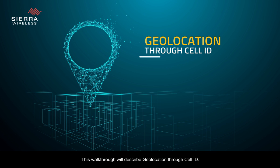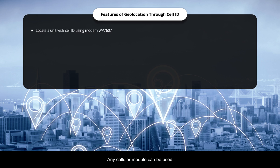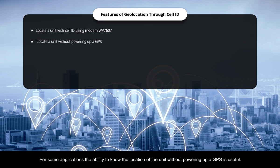This walkthrough will describe geolocation through cell ID. We will explain geolocation through a cell ID using the modem WP7607, which is a 4G, 3G, 2G module. Any cellular module can be used. For some applications, the ability to know the location of the unit without powering up a GPS is useful. Using this method, an application can perform a geolocation operation through the use of a pure cell ID.